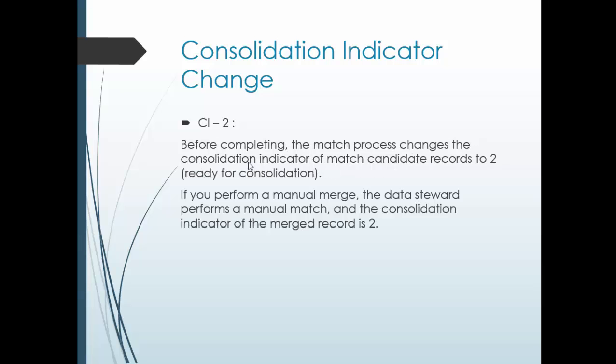Consolidation indicator value 2: before completing the match process, the match process is subdivided into two parts — match process part one and match process part two, where the record gets pushed onto the merge queue. Before just completing the match process, the consolidation indicator of the matched candidate record is turned to 2, meaning it is ready for consolidation or ready for merge.